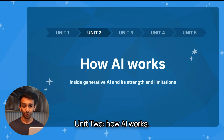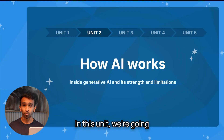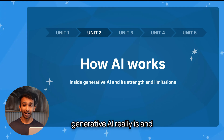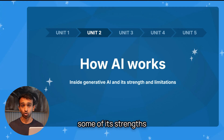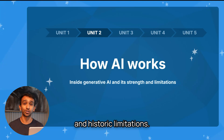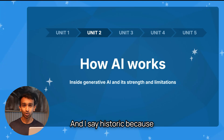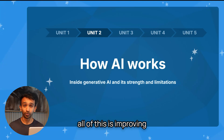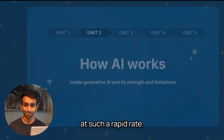Unit two: how AI works. In this unit, we're going to understand what generative AI really is and some of its strengths and historic limitations. And I say historic because all of this is improving at such a rapid rate.